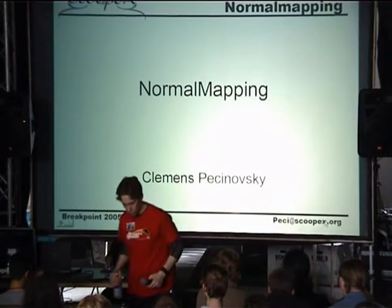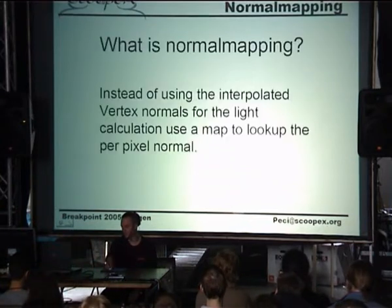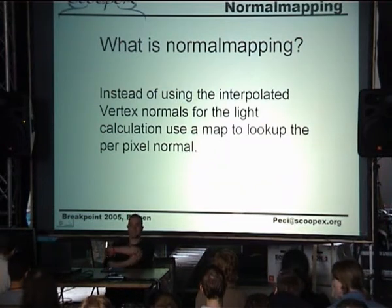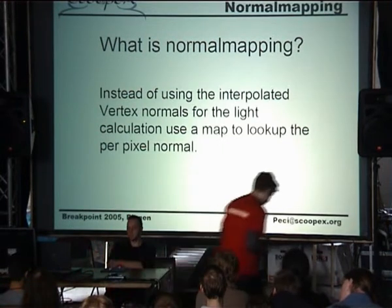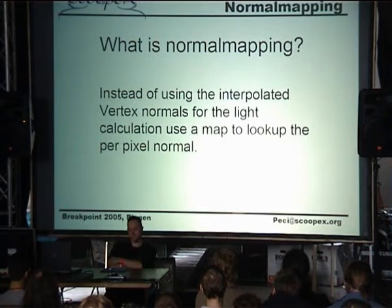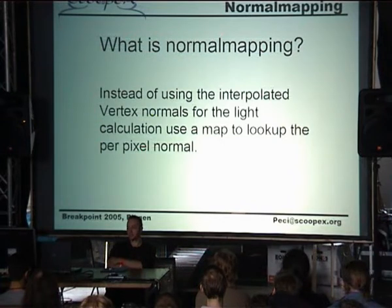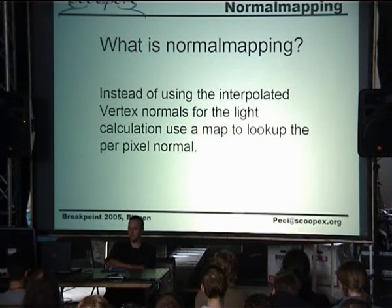I'm Peetzy from Scoopax and I want to talk about Normal Mapping. So what is Normal Mapping? Normal Mapping is basically referred to also as Bump Mapping, but it is different to the Bump Mapping used in the demo scene — for example those 2D Bump Mapping techniques — because there we just use some offset for the texture lookup, whereas with Normal Mapping we do per-pixel lighting and instead of using the normal from the object we look it up from a map.